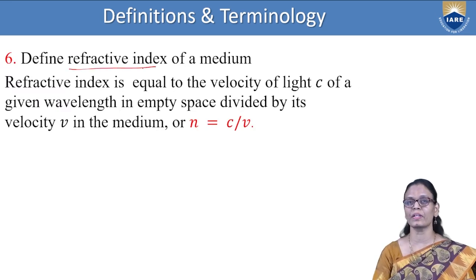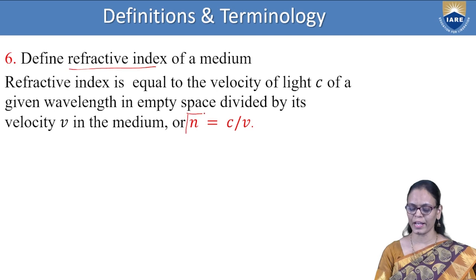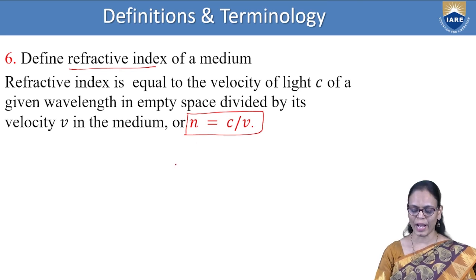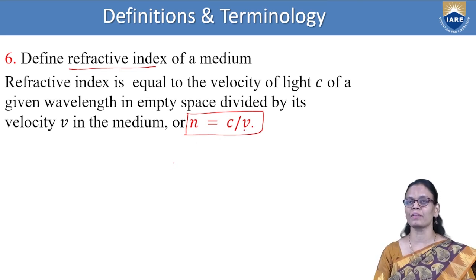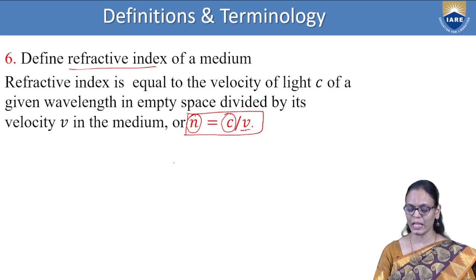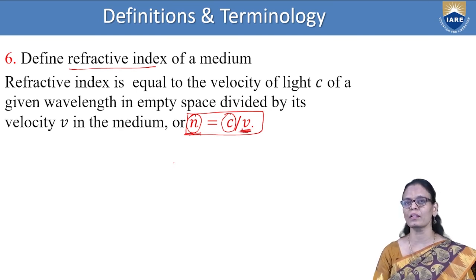Define refractive index of a medium. The refractive index is given by the ratio of the velocity of light in vacuum to the velocity of light in the medium: N = C / V, where C is the velocity of light (a constant) and V is the velocity of light in that particular medium. The refractive index of different materials depends upon the velocity of light with which it travels in that particular medium.